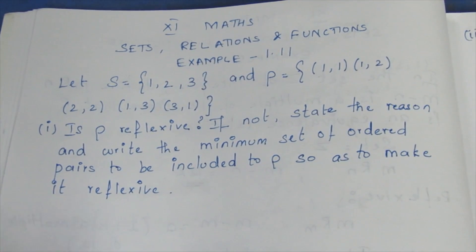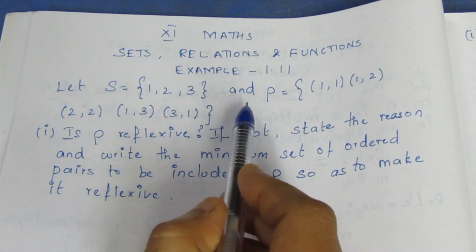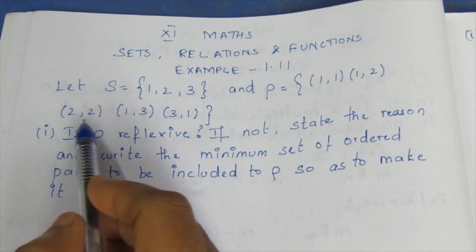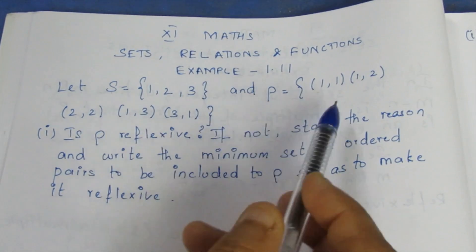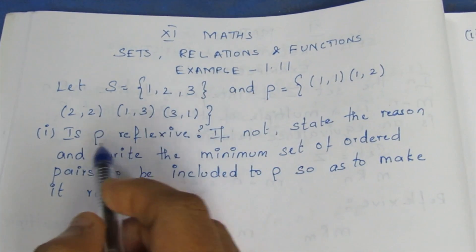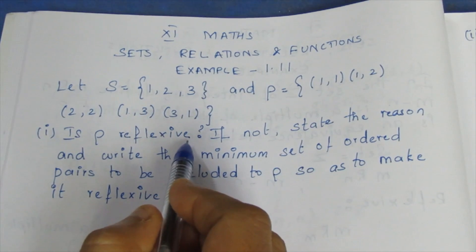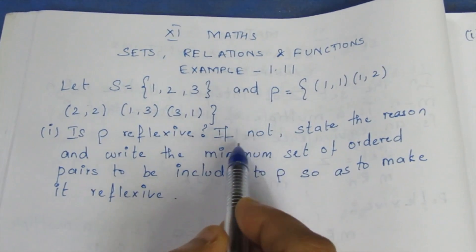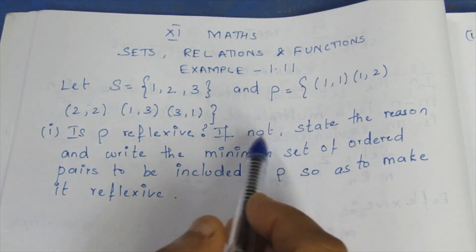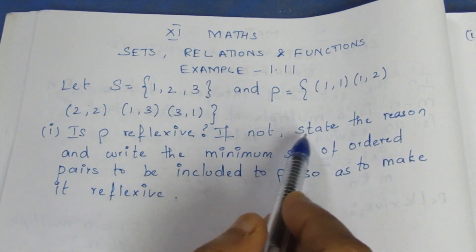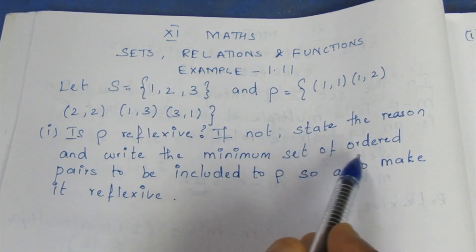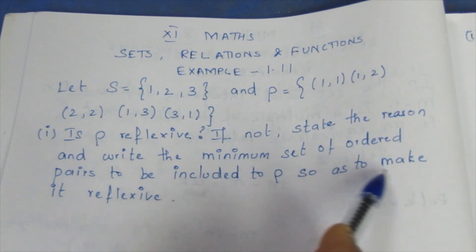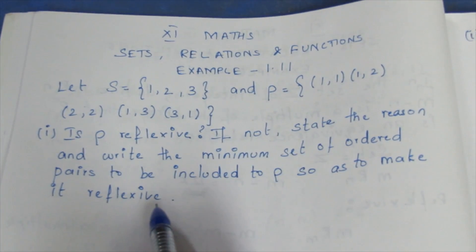The question is: X is equal to {1, 2, 3} and P is equal to {(1,1), (2,2), (2,1), (3,1)}. Is P reflexive? If not, state the reason and write the minimum set of ordered pairs to be included so as to make P reflexive.